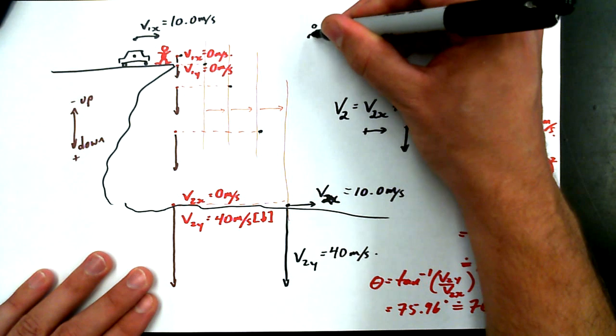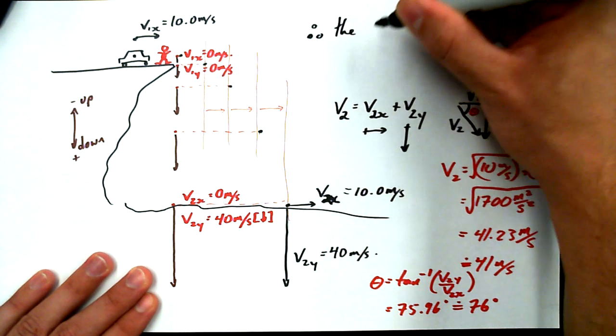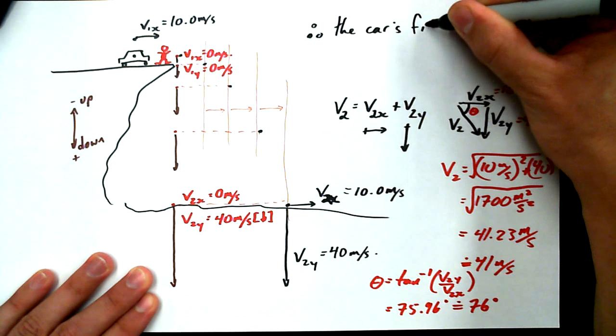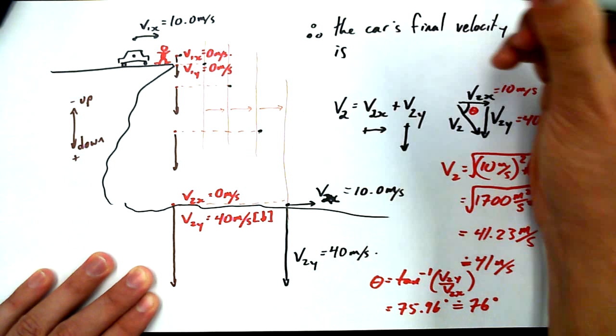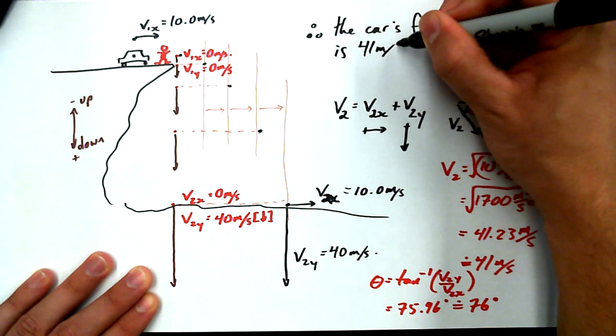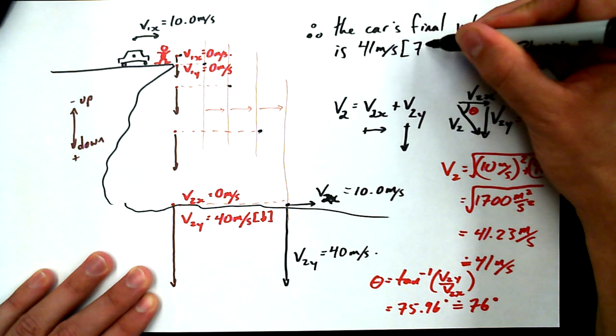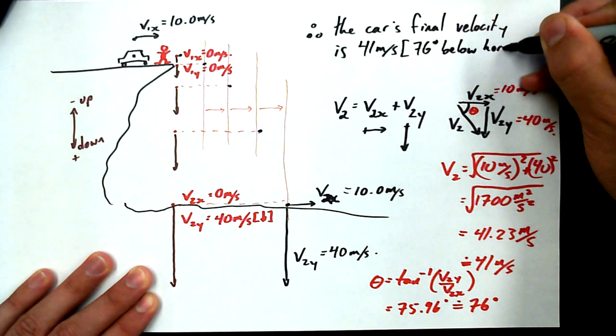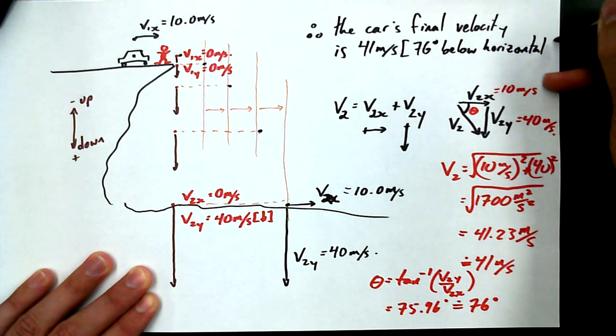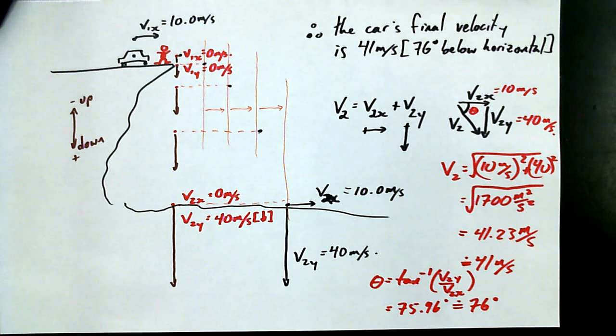Therefore, the car's final velocity is 41 meters per second, 76 degrees below horizontal. We can figure out what the final velocity is. This is similar to something that some of you did in the problem where you dropped a ball vertically in a bus that was moving horizontally.